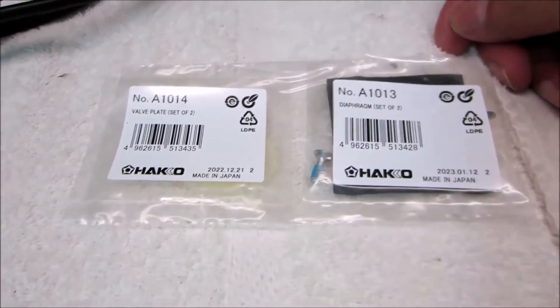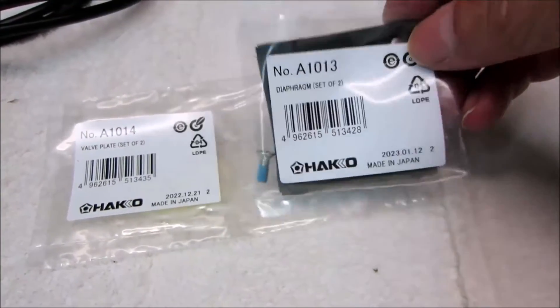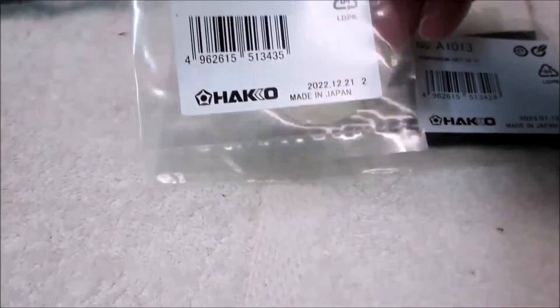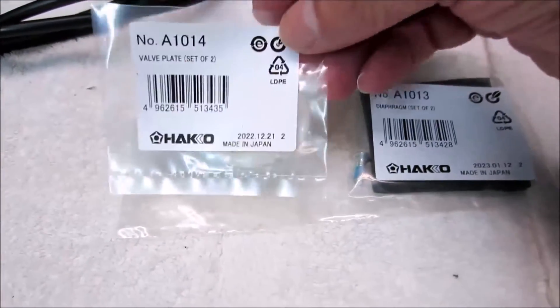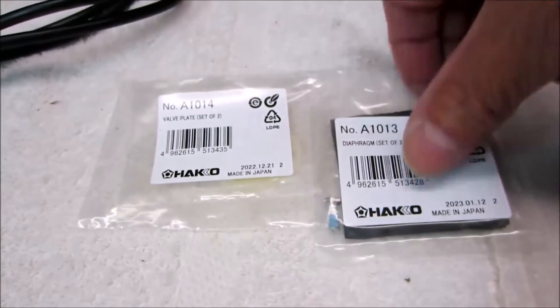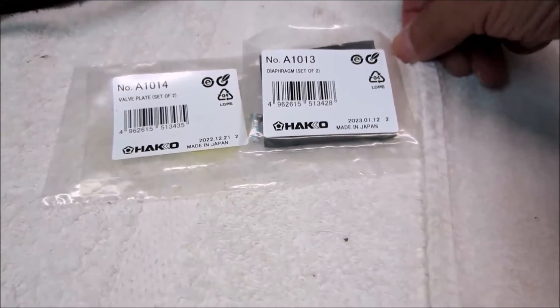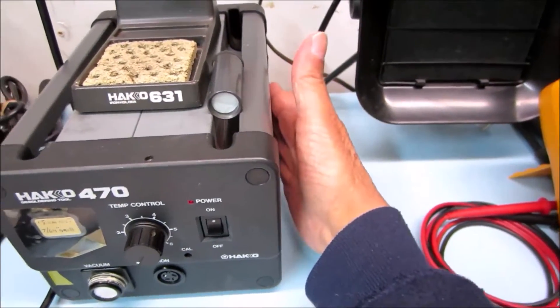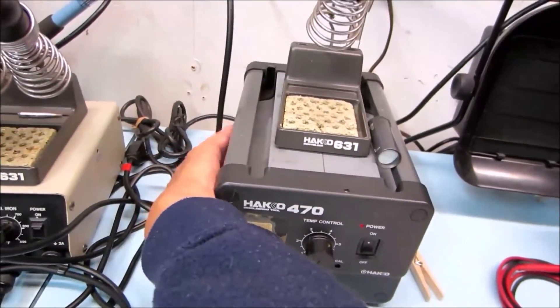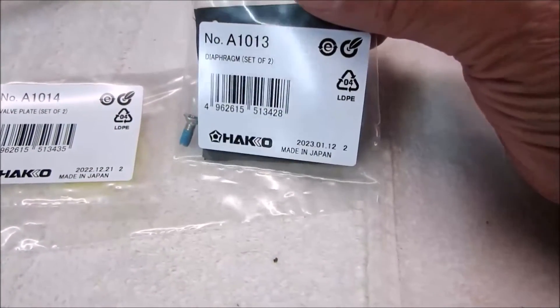So the next two suspects, lots of discussion about this online, is this diaphragm set, part number A1013, and also this valve plate set, part number A1014. Now, this represents about $45 with shipping for these two parts total. That's what I paid. I bought some new ones. And these go on either side of the pump. The pump motor is in the middle of this box. So you've got one set on this side, one set on that side of the motor. They're very easily installed. Here's my old ones.